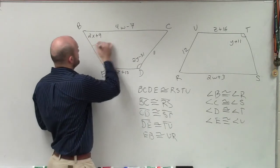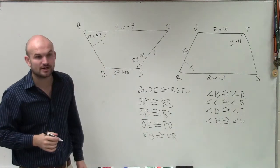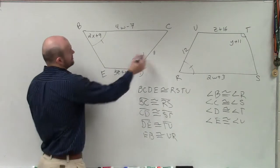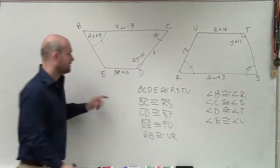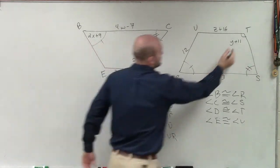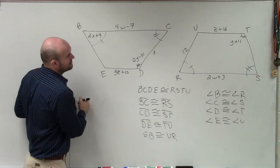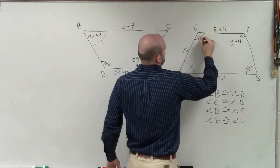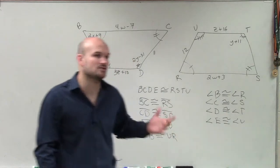Angle B is congruent to angle R. So this angle B is congruent to that angle R. So I'll give them one tick mark, meaning they're equal in measure. Angle C is congruent to angle S. Angle C is congruent to angle S. Angle D is congruent to angle T. And then angle E is congruent to angle U. So now you guys can see that each one of those angles are congruent to one another.